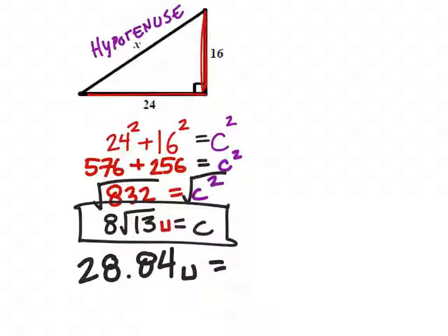So 28.84 in units is, I guess, X. We used C, but it doesn't matter. That is the answer. I would accept either answer, by the way. Both of those are good.